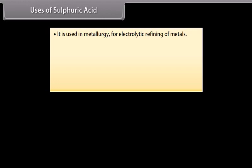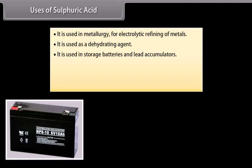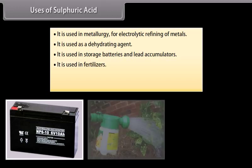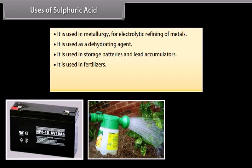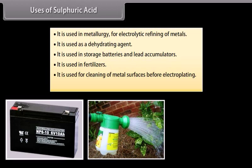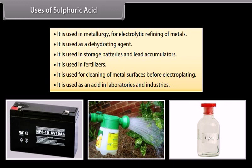Uses of sulphuric acid. The important uses of sulphuric acid are following: It is used in metallurgy for electrolytic refining of metals. It is used as a dehydrating agent. It is used in storage batteries and lead accumulators. It is used in fertilisers for the preparation of ammonium phosphate, ammonium sulphate and super phosphate of lime. It is used for cleaning of metal surfaces before electroplating. It is used as an acid in laboratories and industries.